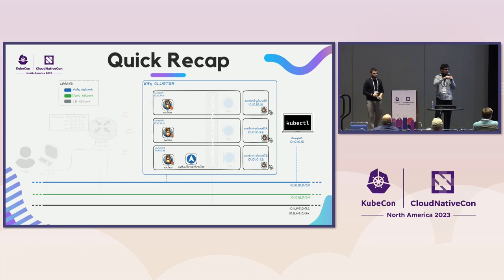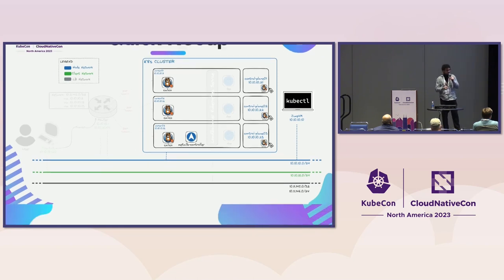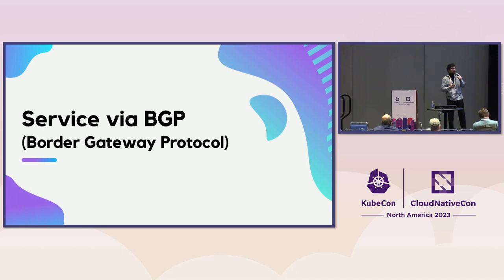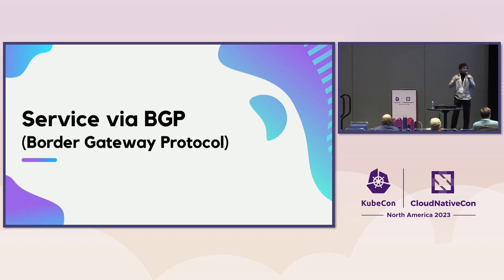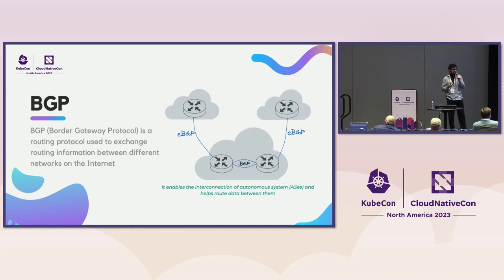Our infrastructure now consists of the Kubernetes cluster with a Calico node on each node and only the MetalLB controller. The next step—the real engine of our setup—is the BGP configuration. BGP (Border Gateway Protocol) is the protocol used to route traffic between autonomous systems. Autonomous systems are network entities that can route traffic to reach destinations across networks. In our setup, we need two autonomous systems: the router itself, and the Kubernetes cluster.